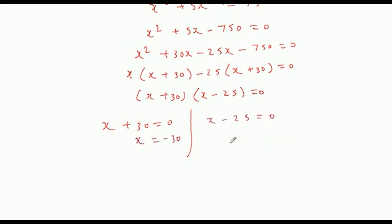x plus 30 equal to 0, x minus 25 equal to 0. x equal to minus 30 or x equal to 25. So we can see that speed cannot be negative, therefore speed of x is 25.